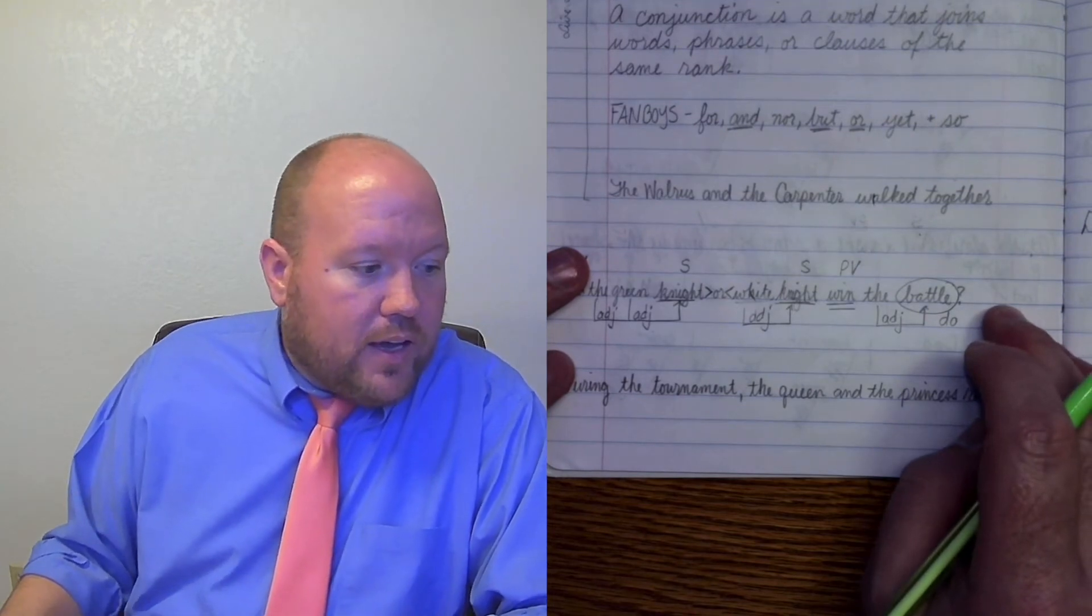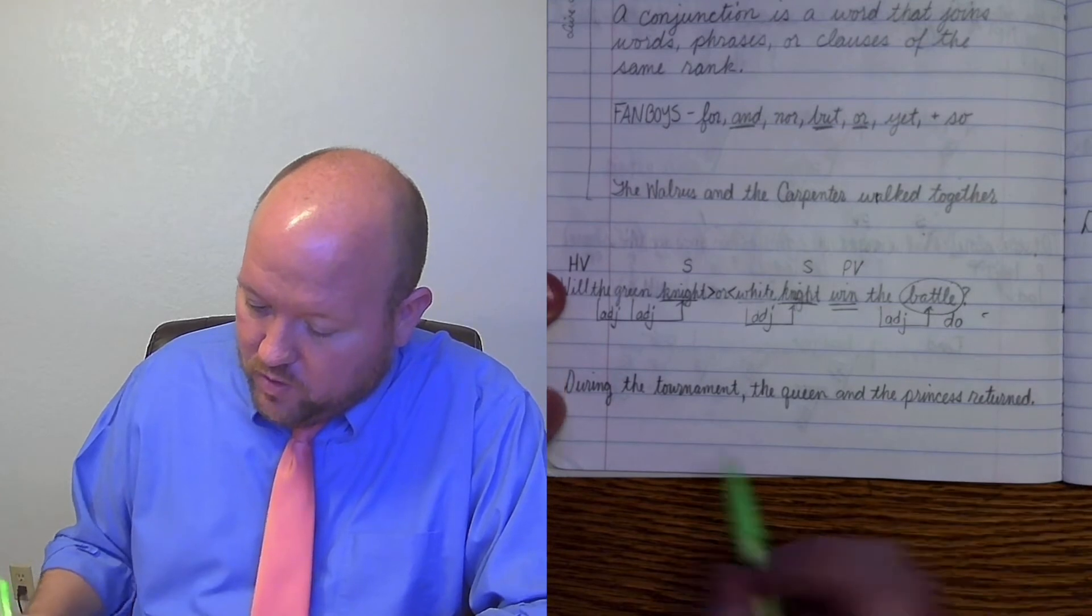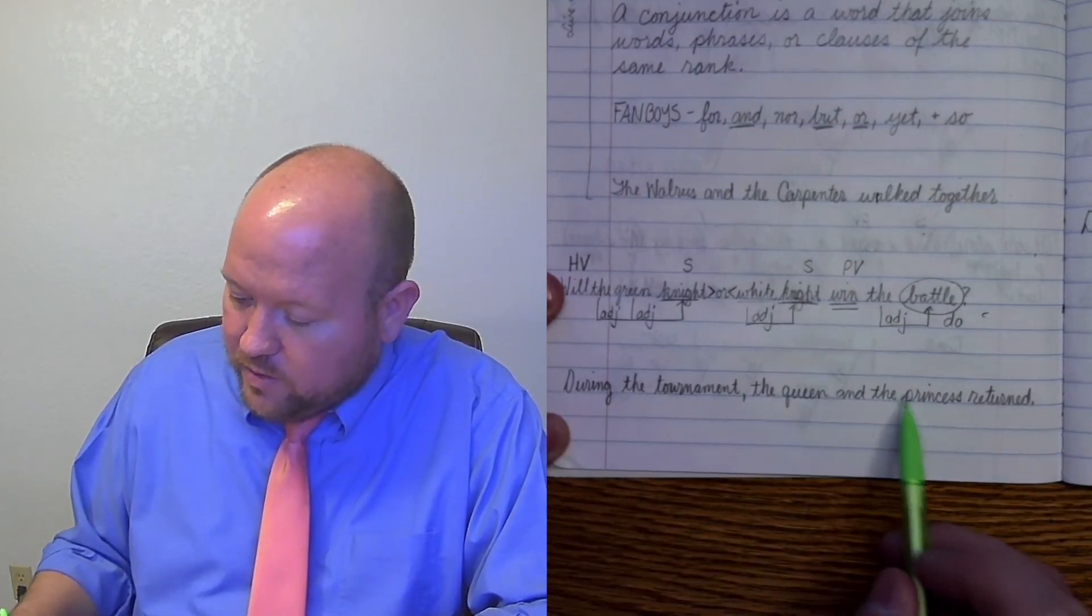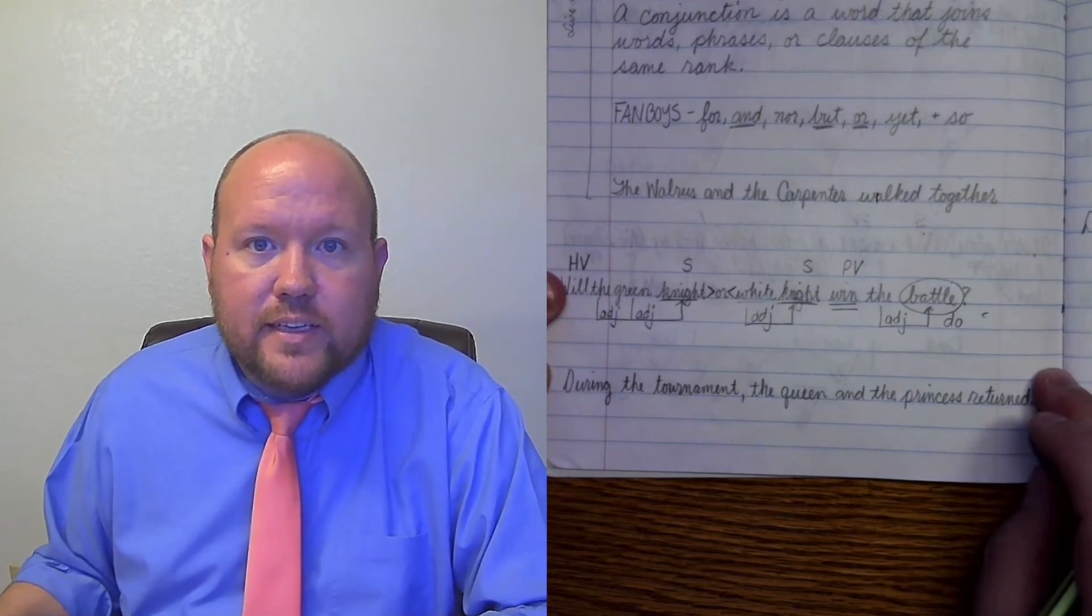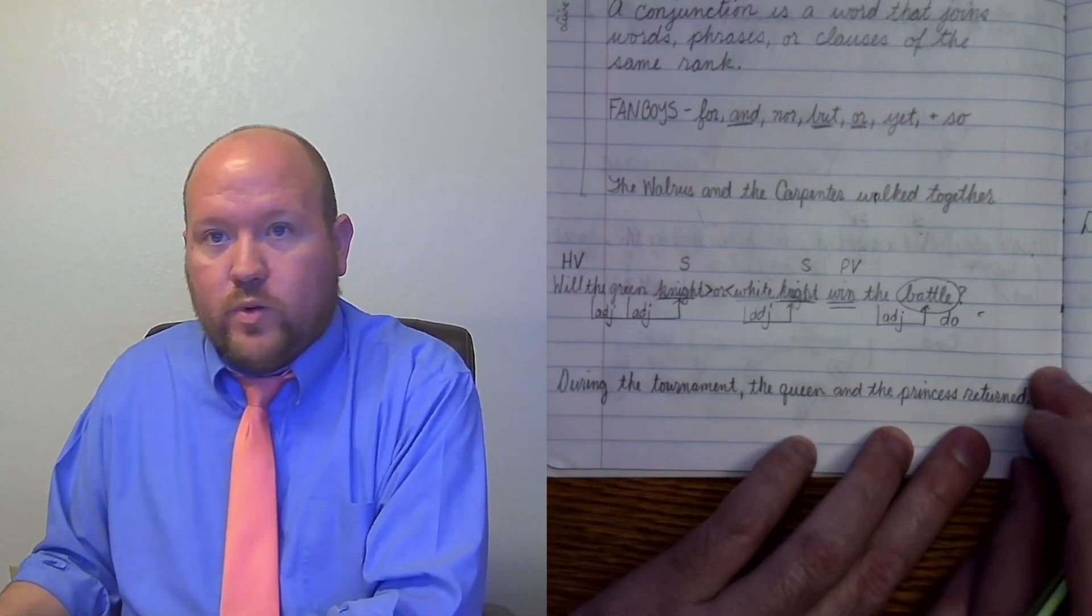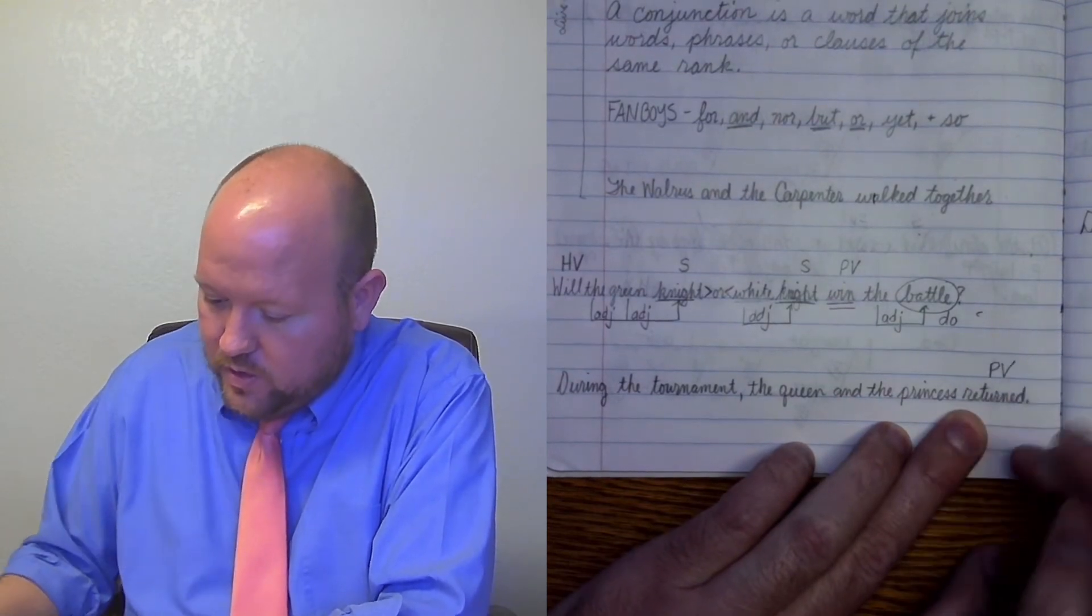Now, so let's go ahead and look at this sentence down here. During the tournament, the queen and the princess returned. So what is our verb in this sentence? Our verb is return. That's the action. So predicate verb.